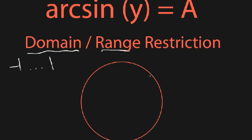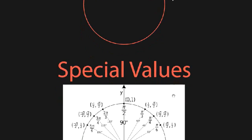There's also a problem: to be a function, you can only give one output for every input. But if you ask for the angle that gives a certain y coordinate, there are actually two angles that work — one here and one further around the circle. You don't need to calculate arc sine values in calculus in detail, but be aware there's a problem with the domain and range for inverse trig functions.